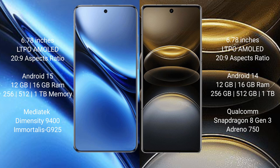The Vivo X200 Pro has 12GB and 16GB RAM options with 256GB, 512GB, and 1TB internal storage, powered by the MediaTek Dimensity 9400 processor. The Vivo X100 Ultra also offers 12GB and 16GB RAM with 256GB, 512GB, and 1TB storage, but runs on the Qualcomm Snapdragon 8 Gen 3 processor with Adreno 750 GPU.